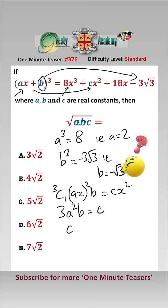So therefore, c, just putting in the values of a and b, equals minus 12 root 3.